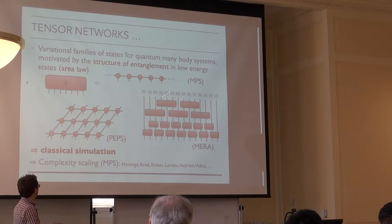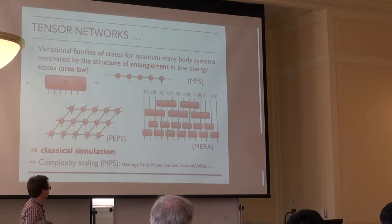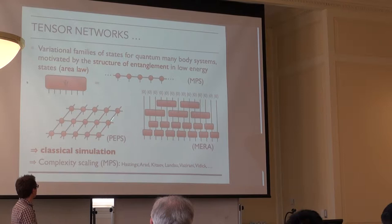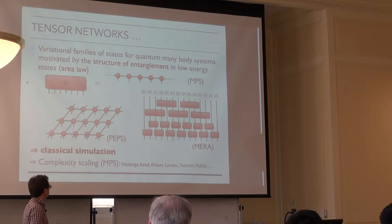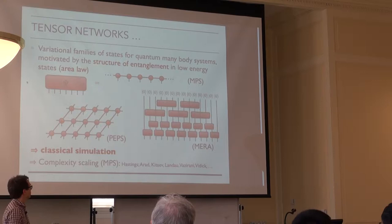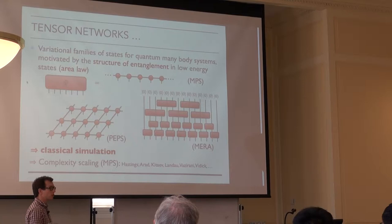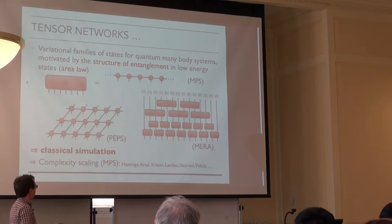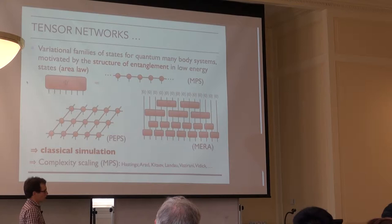Different families correspond to the underlying lattice structure. Matrix product states are the most well-known and numerically successful for one-dimensional lattice systems. Their natural generalization to higher dimensions are projected entangled pair states (PEPS), formulated by Verstraete and Cirac. Matrix product states have a long history: they appear in Baxter's work, reappeared in DMRG, and in mathematical physics as finitely correlated states. There is also MERA — the multiscale entanglement renormalization ansatz of Guifré Vidal — which I'll discuss in the main part of this talk.